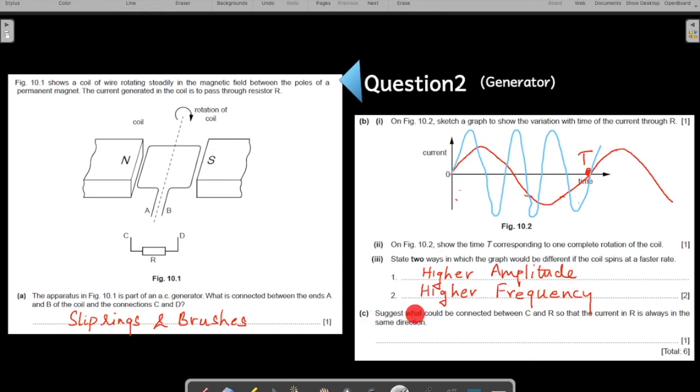Now the last part, C, suggests what could be connected between C and R. So they are saying to introduce something in this space. Introduce what? That is a question mark. So that the current R is always in the same direction. So as you could have studied in electricity, what is that device which maintains current in one direction and if the current is reversed, locks the current. What is that device? It is called diode. So your answer should be,